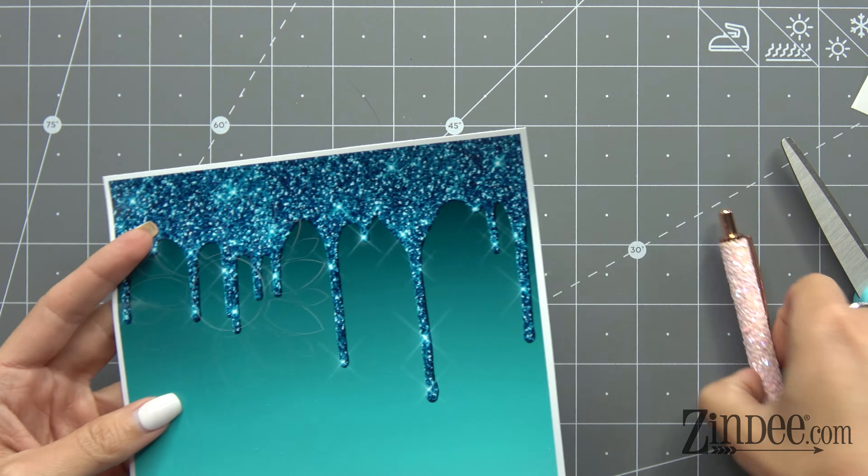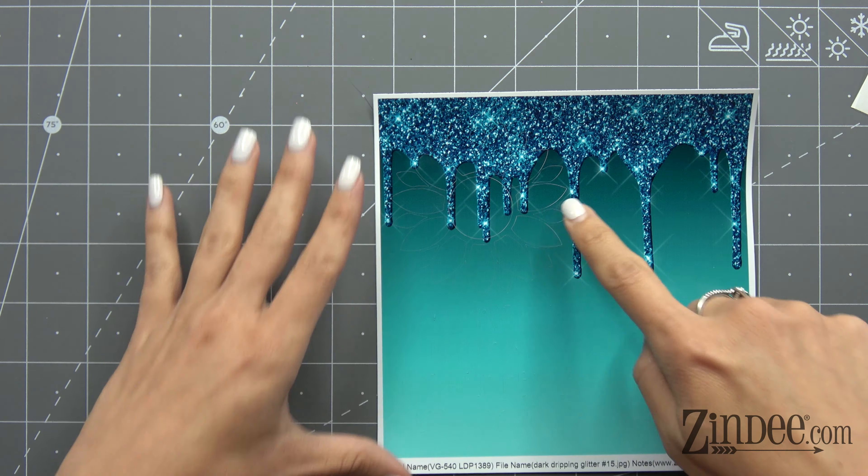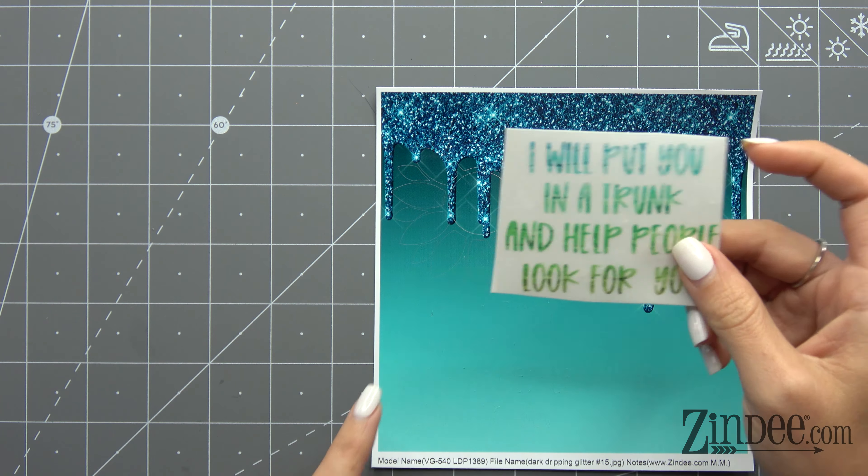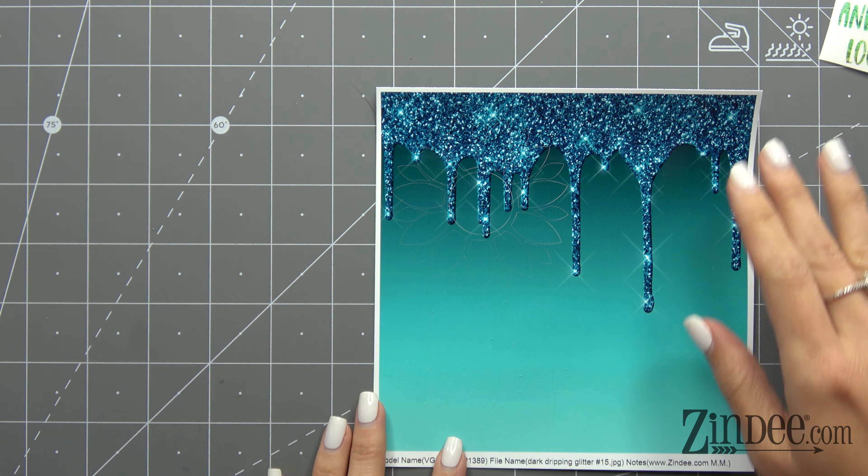So for this one, I already went ahead and cut a sunflower, and then I cut this one which is the 'I will put you in a trunk and help people look for you' acrylic.